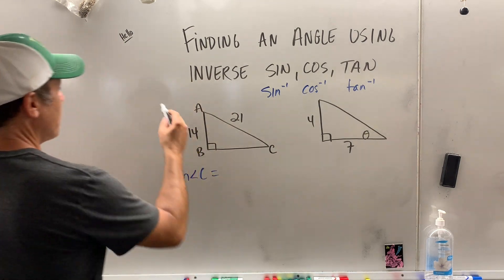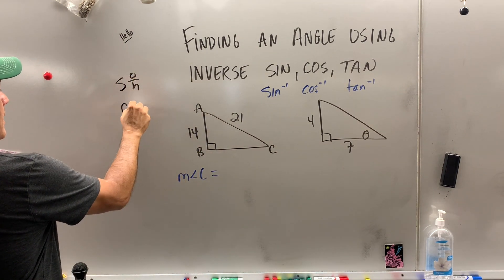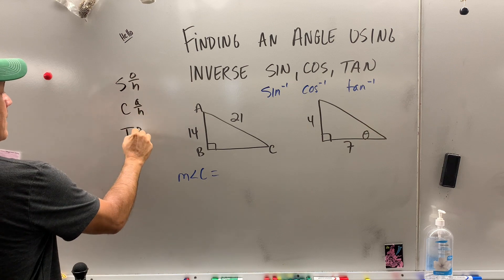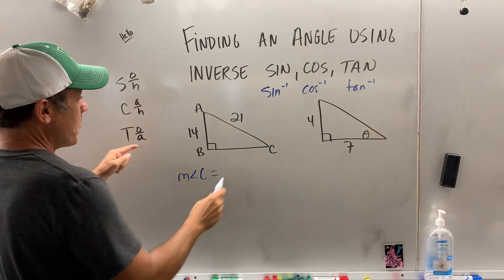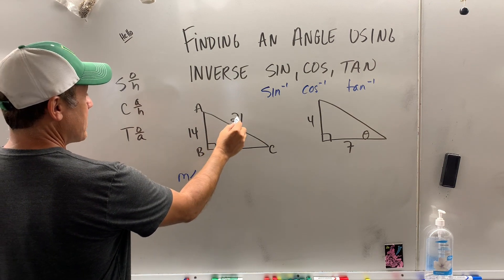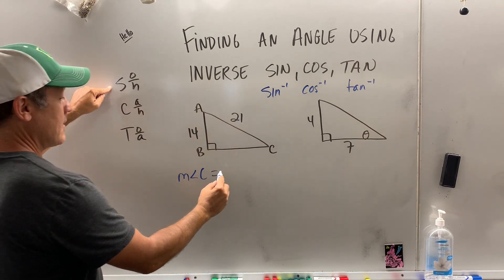Well, if you remember, some old horse came a-hopping through our alley. So, this is the opposite, and this is hypotenuse, so that is sine.